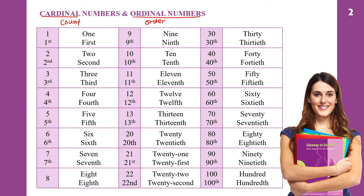Let's study the numbers together. This is number 1 cardinal, and 1st — this is ordinal. Then 2 and 2nd — you can write 2nd like this. Then 3 and 3rd. Watch the spelling: 3 and 3rd.